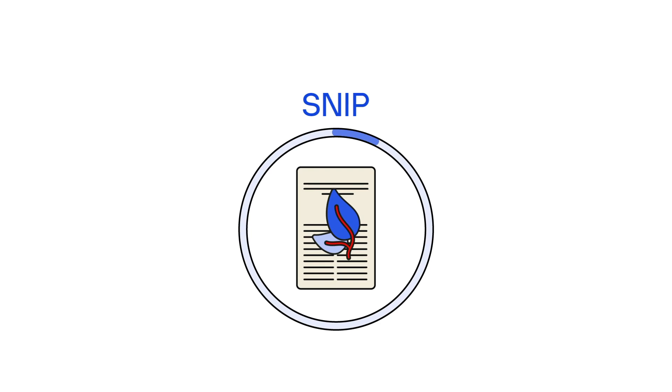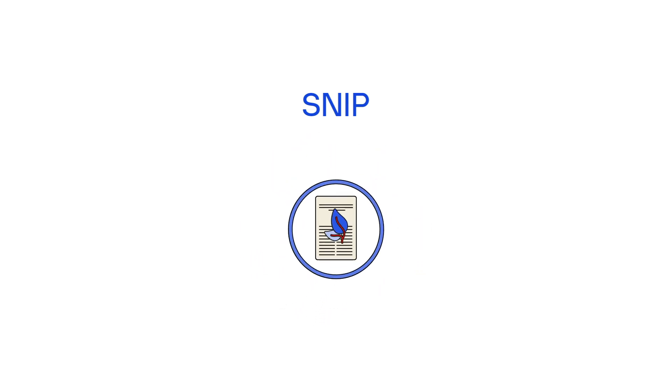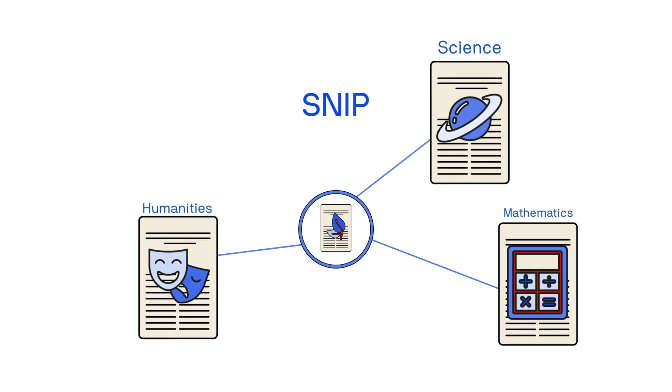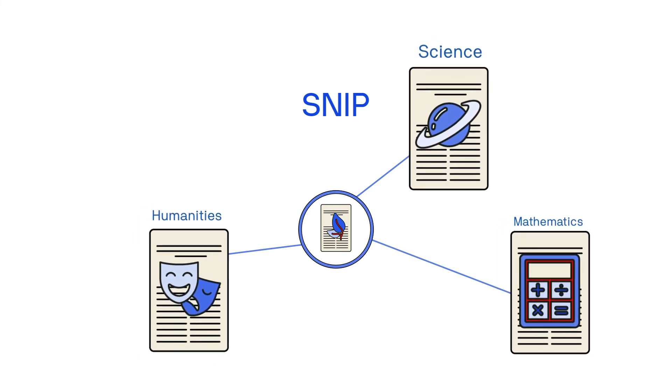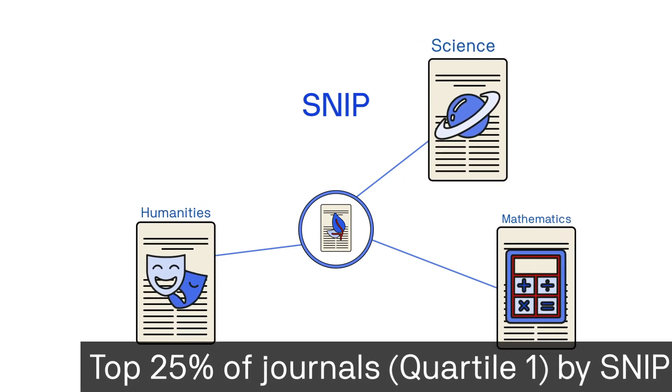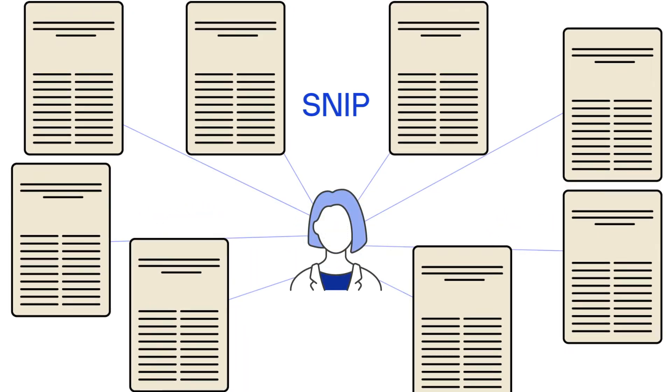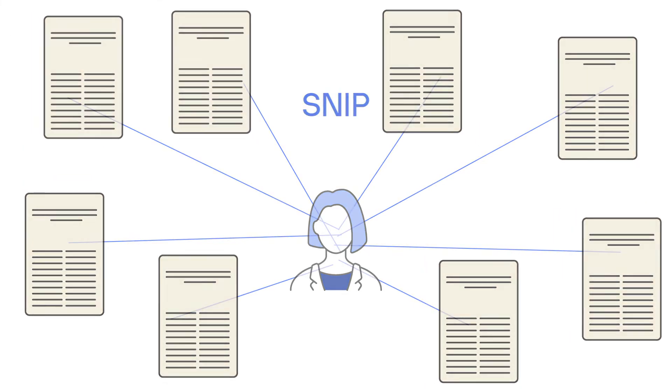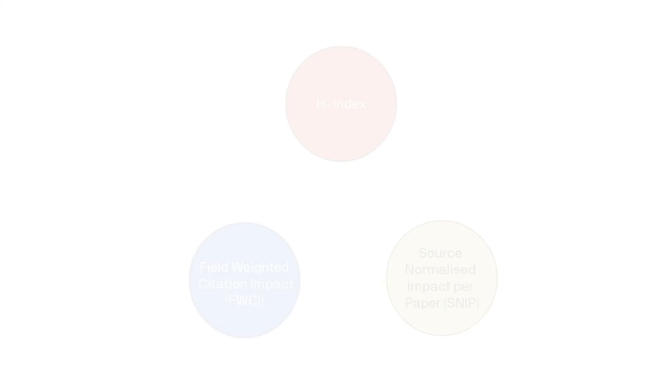SNP stands for Source Normalised Impact Per Paper. It measures the impact of a journal in its field and is field normalised, which allows you to compare journals across different disciplines. In this example, Jane has eight articles published in the top 25% of journals as ranked by SNP.